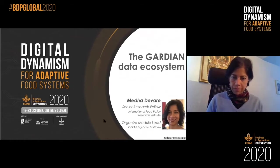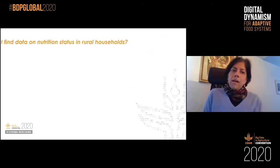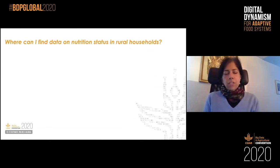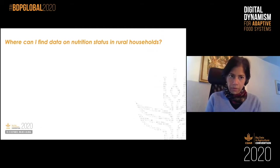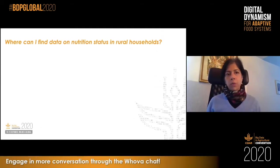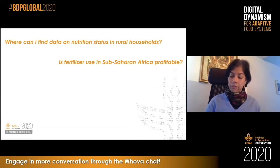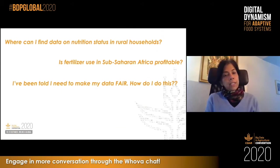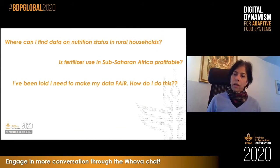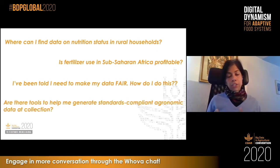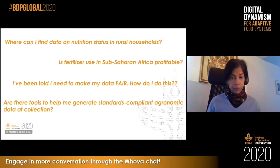To start with, I'm going to couch this in terms that I think we've all probably grappled with. We find ourselves often asking questions such as: Where can I find data on nutritional status of rural households? What is the profitability of fertilizer use in Sub-Saharan Africa? Where should I be investing? I've been told that I need to make my data FAIR, but I have no idea how to do this. Can you help me? And I want to be able to collect my agronomic data that's already standards compliant — are there any tools to help me do this?